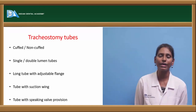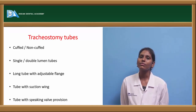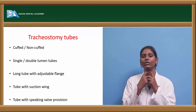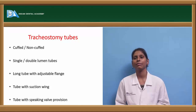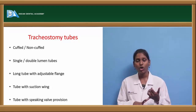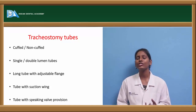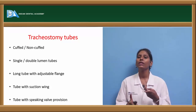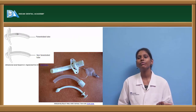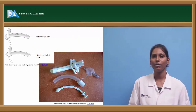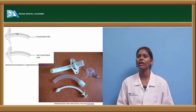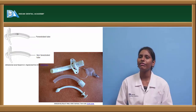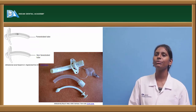Based on position, tracheostomy is classified as high, mid, or low tracheostomy. Various tracheostomy tubes are used: long tubes with adjustable flange, single or double lumen tubes, cuffed or non-cuffed tubes, tubes with suction port, or tubes with speaking valve provision.